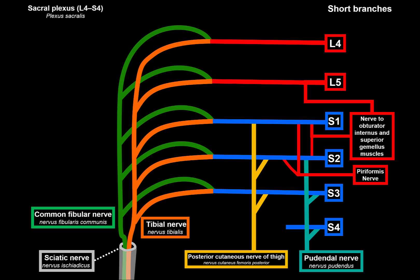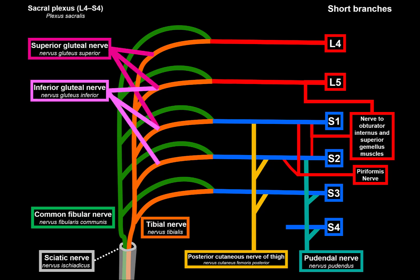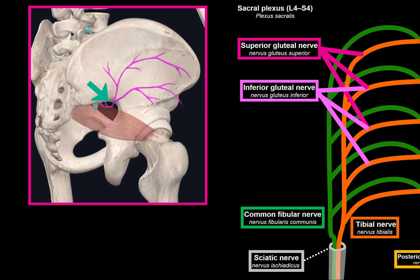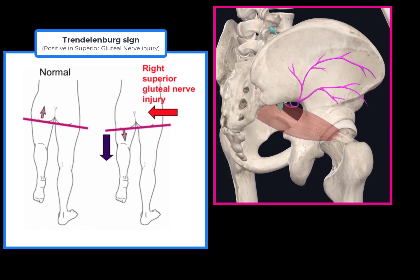The last two short branches are the superior and inferior gluteal nerves. The superior gluteal nerve comes from the anterior branches of L4, L5, and S1, runs through the suprapiriform foramen, and innervates the gluteus medius, gluteus minimus, and tensor fasciae latae — which are important abductors. Damage causes impaired hip abduction, difficulty walking and standing on one foot, a duck-like gait, and a positive Trendelenburg sign.